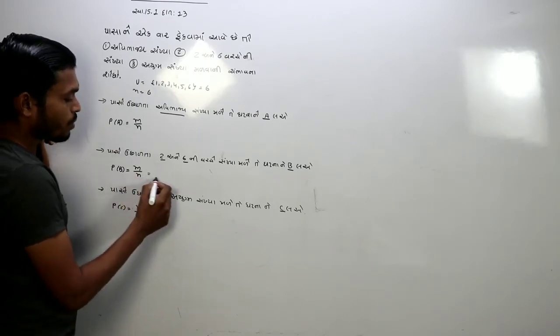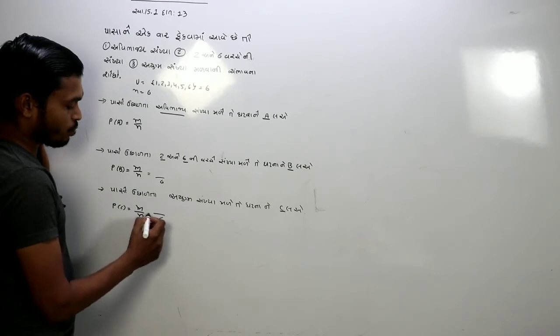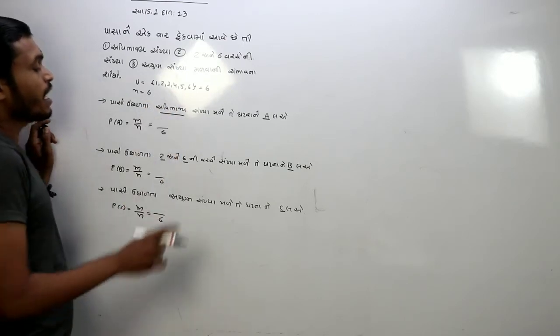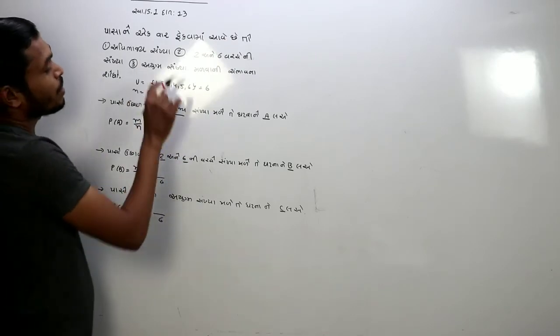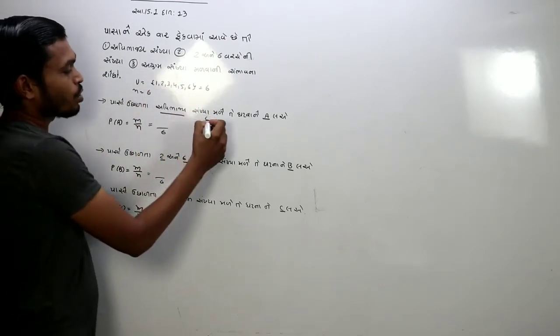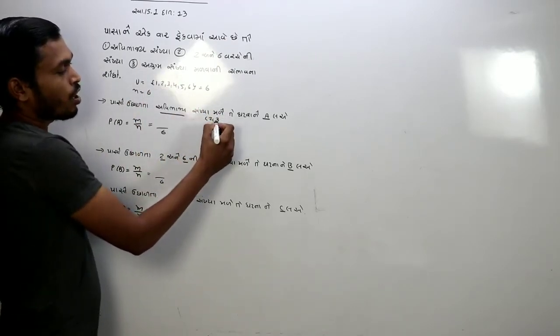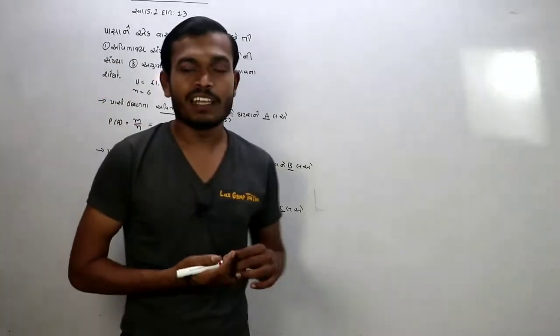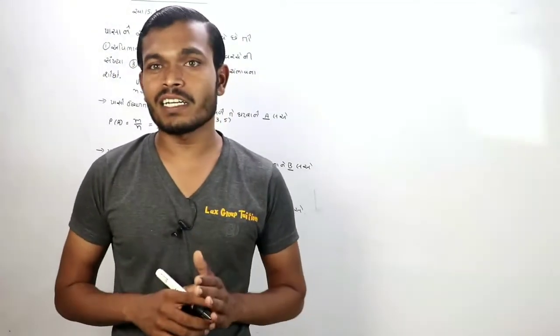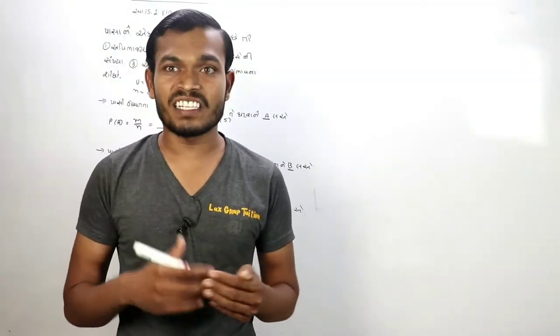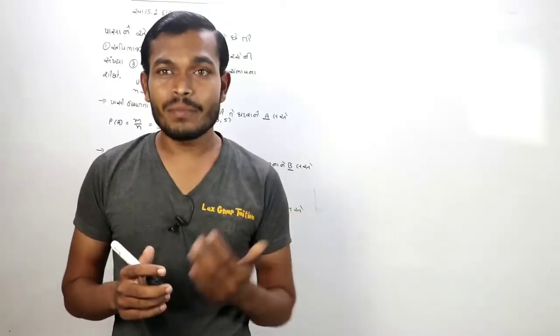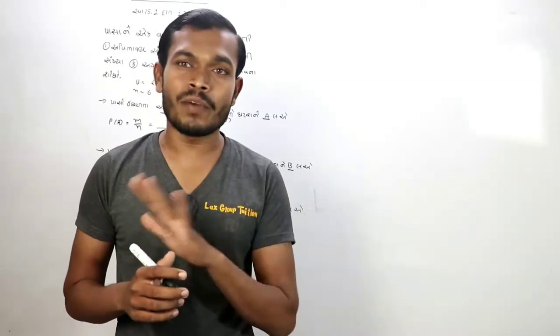કુલ તેમને ખબર છે કે આવે તો બધાને નીચે સમ કરી દેવાના. આપણે બે ને એક વાળે ભાગી શકાય, બીજો ભાગી શકાતી ને ચાર ને આપણે જોઈએ કે તો ભાગી શકાતી નથી (You know that we'll sum all of them below. Two can be divided by one, another can be divided, and four - let's see if it can be divided or not).